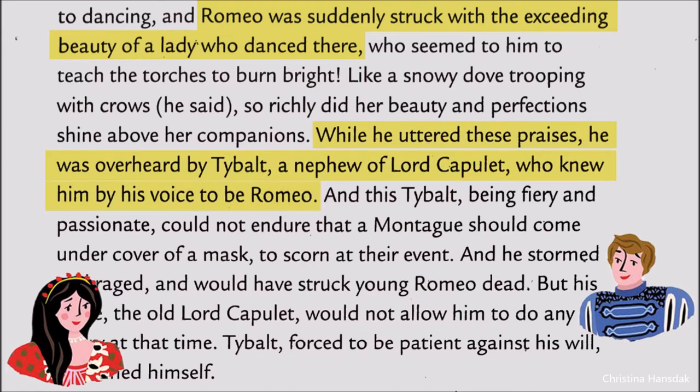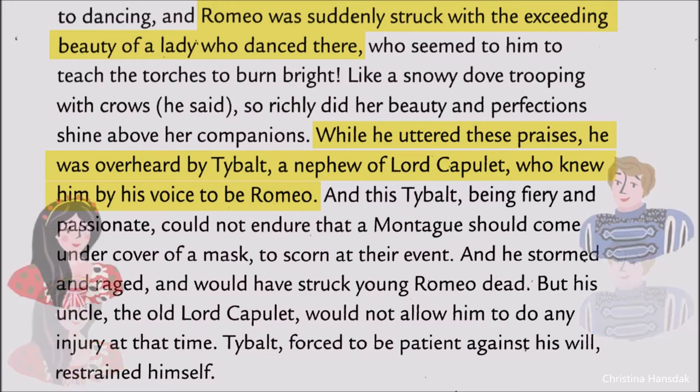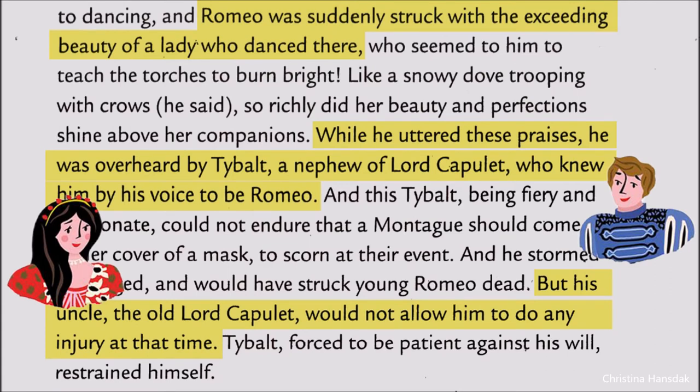As he was uttering praises for Juliet, he was overheard by Tybalt. Tybalt understood that the voice was of Romeo the Montague. He would have struck Romeo, but old Lord Capulet, his uncle, did not allow him to do so, and told him to keep patience.